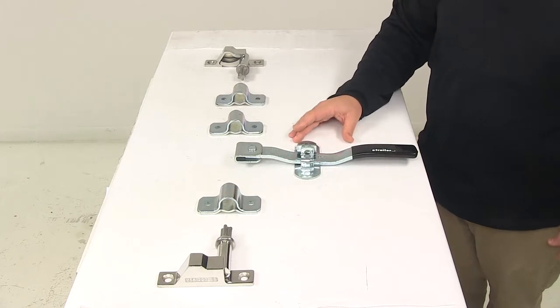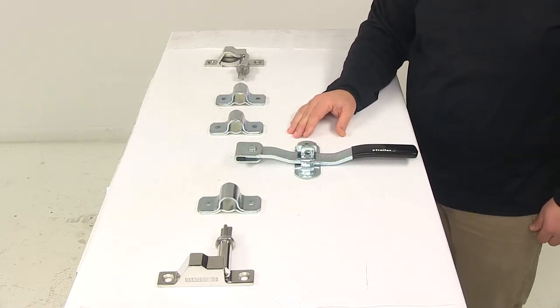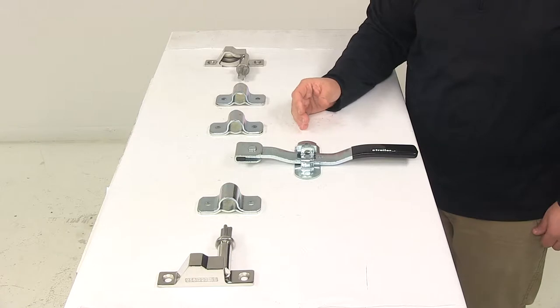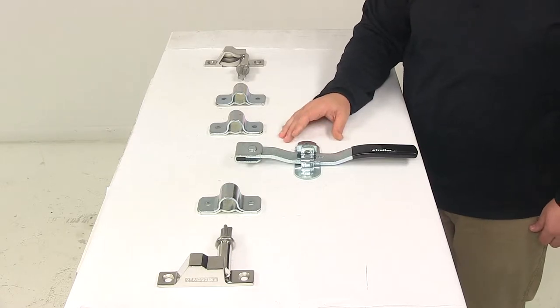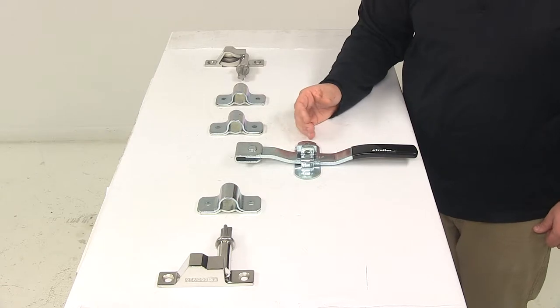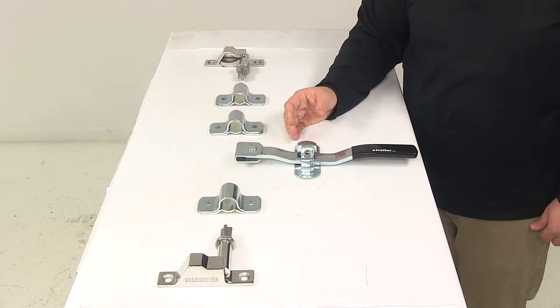This unit is designed for flush to three quarter inch offset doors and it's universal for the right or left hand door. It can be used for side or rear door applications. It's going to feature a bridge type keeper that prevents accidental opening and ensures safe locking action.